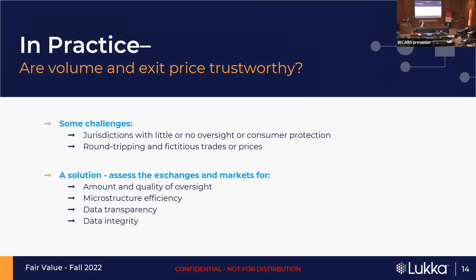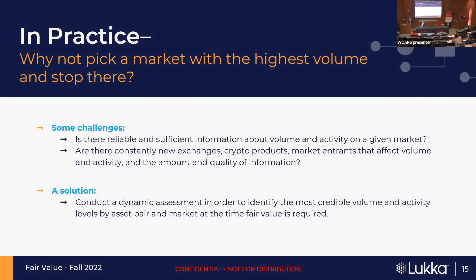On volume and exit price trustworthiness: there are jurisdictions with very little or no oversight and customer protection, so an exchange might be in one of those jurisdictions. There can be a lot of round-tripping and fictitious trades, so you have to think about and look for that. A possible solution is to assess all 350 markets and exchanges for a series of really important qualitative things — quality of oversight, amount of oversight, whether the microstructure of that particular exchange is efficient, data transparency, and data integrity. Dan and his team are looking at that constantly across all those markets.